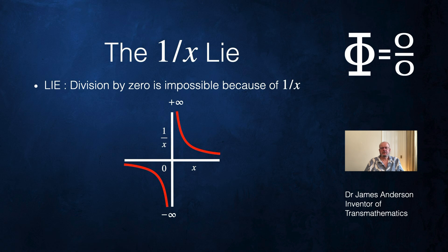Welcome to Transmathematica. I'm James Anderson. Today we're going to talk about the proofs that attempt to persuade you that division by zero is impossible because of one over x.